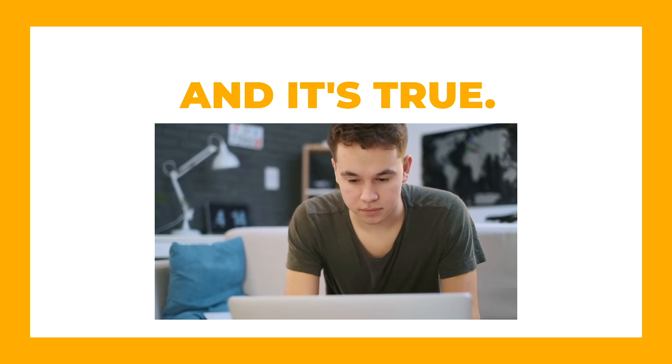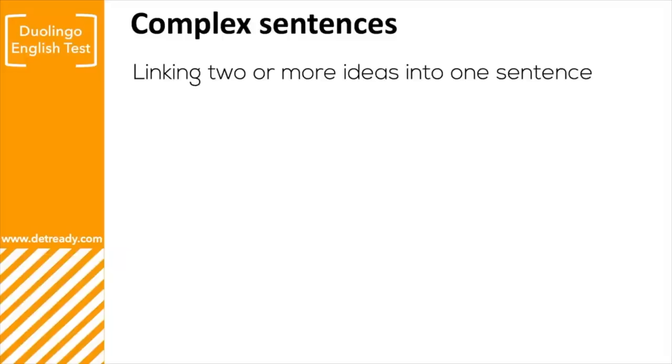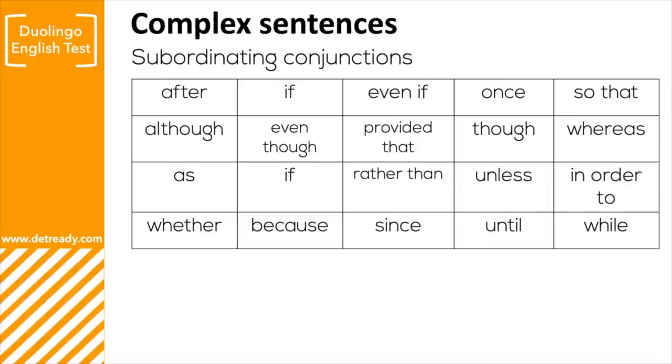You want to use a range of simple and difficult grammar. To get the highest score in production you need to use complex sentences well at least once, maybe even twice, in all your speaking and writing answers. A lot of students avoid complex sentences because they're a little difficult, but it's not that hard if you learn them correctly. So what is a complex sentence? Basically it's linking two ideas or two simple sentences together using a subordinating conjunction — that's a fancy word for linking words like 'although,' 'whereas,' 'because,' and so on.